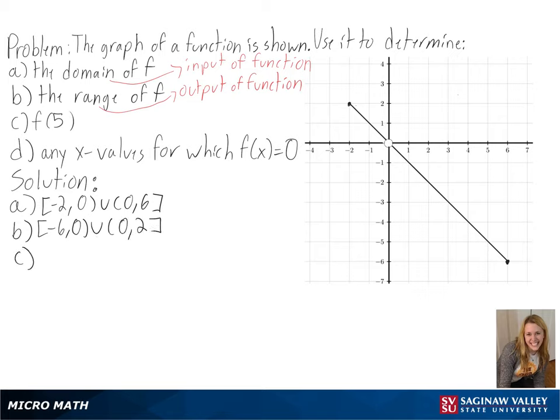Then we need to find f of 5. Since 5 is our x value, we need to find the y value that connects to our function. And we can see here, we get negative 5 as our y value.